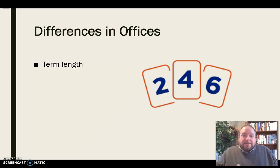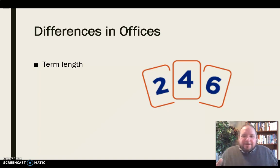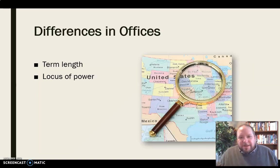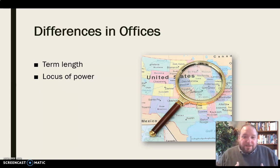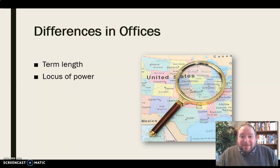The fact that somebody serving in the House has to run much more frequently than somebody serving in the Senate — three times more often, because they have a two-year term as opposed to a six-year term. The locus of power is also different for each of these offices. For the president, their power is national, but they have very little power locally — not only to set policy, but they don't campaign locally or message locally as much.